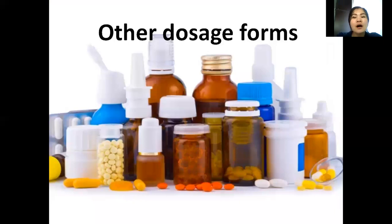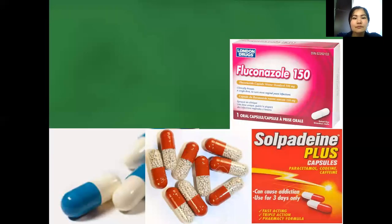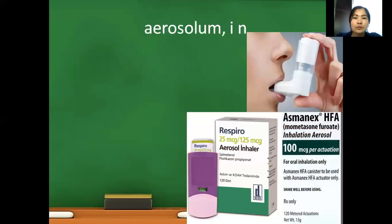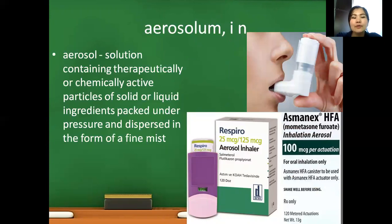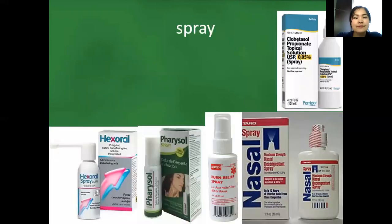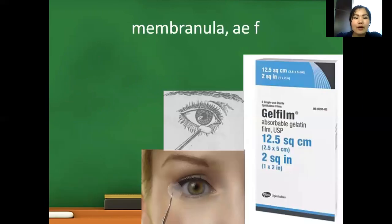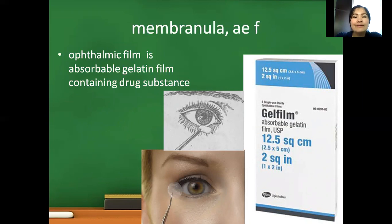The next group of dosage forms is other dosage forms. Capsula — capsule — a powdered drug substance enclosed in a soluble capsule. Aerosol — a solution containing therapeutically or chemically active particles of solid or liquid ingredients, packed under pressure and dispersed in the form of a fine mist. Spray — meaning water dust — a solution dispersed in small drops. Membranula — often called film — an absorbable gelatin film containing drug substance.